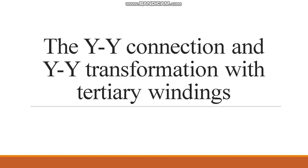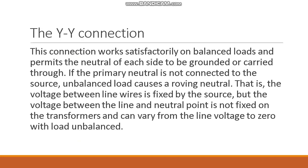The Y2Y connection works satisfactorily on balanced loads and permits the neutral of each side to be grounded or carried through. If the primary neutral is not connected to the source, unbalanced load causes a roving neutral — that is, the voltage between the line wires is fixed by the source, but the voltage between the line and neutral point is not fixed on the transformers and can vary from line voltage to zero with load and balance.